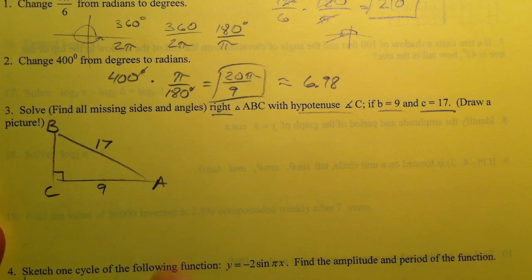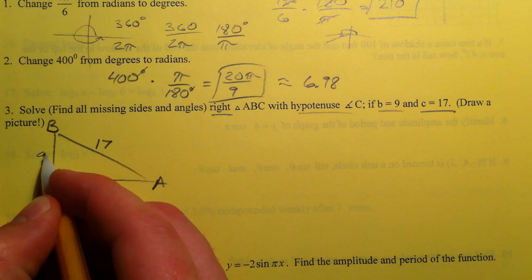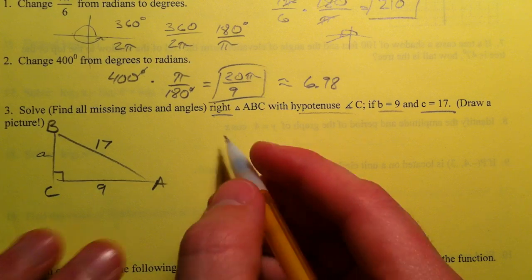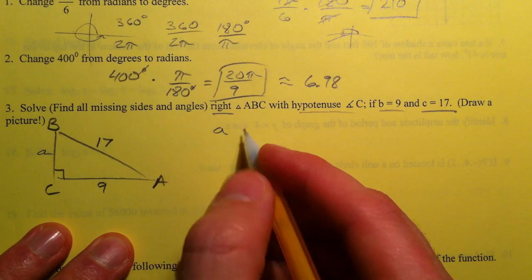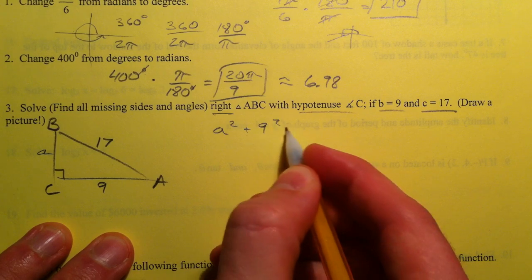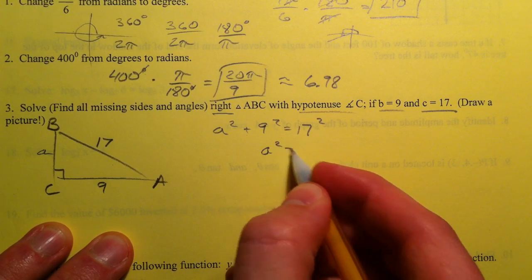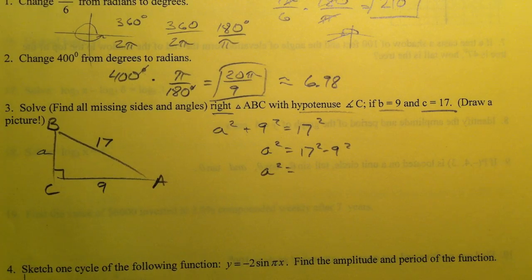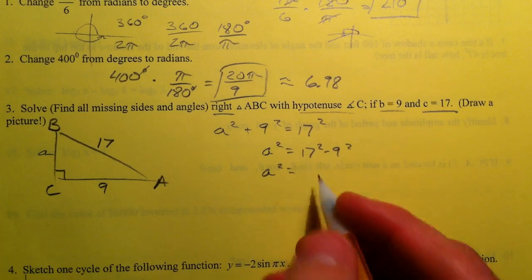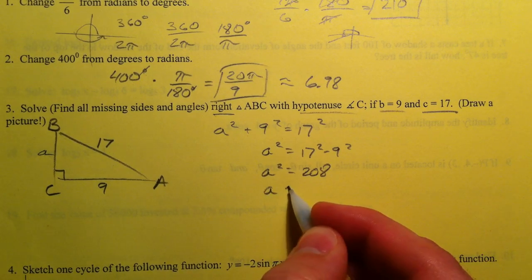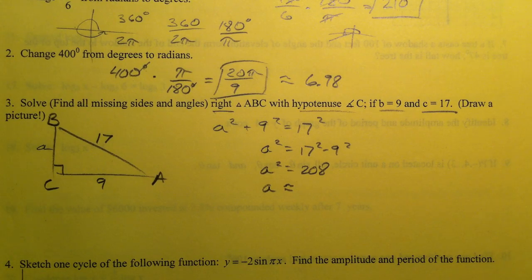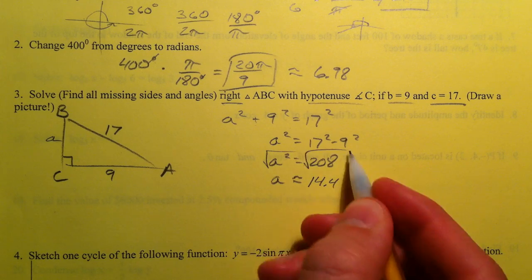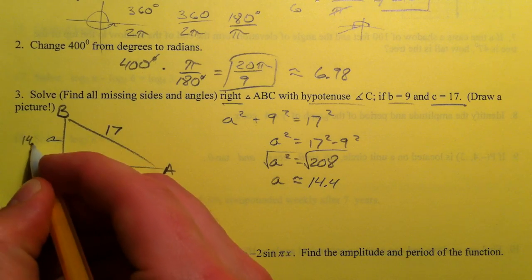So if I want to solve this now, to solve for A, I can use Pythagorean Theorem. And so A squared plus 9 squared equals 17 squared. So A squared equals 17 squared minus 9 squared. So A squared equals 208. So A is approximately the square root of 208, which is 14.4.